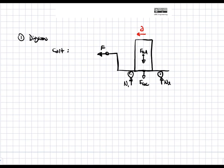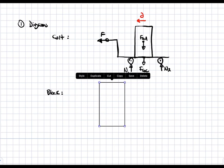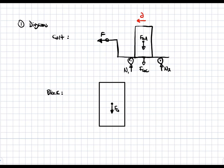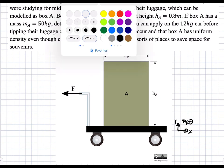We can do a second free body diagram of just the block. The block is going to have the same force due to gravity F_g A, and it's going to have a normal force along with a friction force on the bottom. It's really important that we determine the location of this normal and friction force, since the question asks for the force just before the block starts tipping.